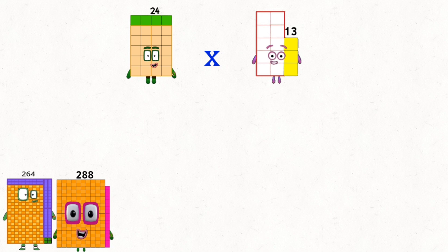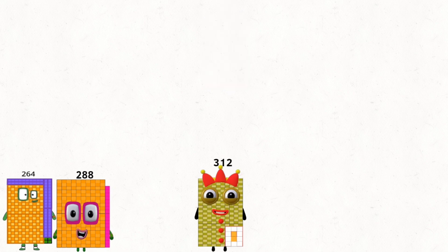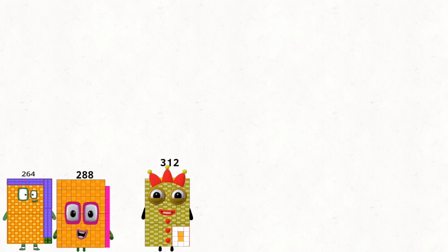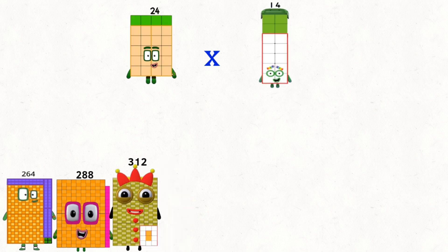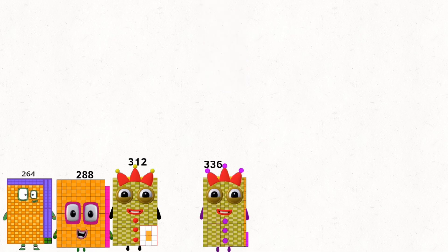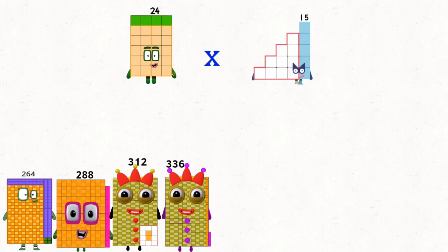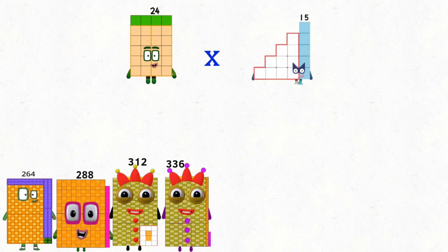24 times 13 equals 312. 24 times 14 equals 336. 24 times 15 equals 360.